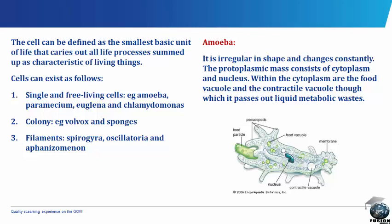Single and free-living cells — examples: Amoeba, Paramecium, Euglena and Chlamydomonas. Colony — examples: Volvox and Sponges. Filaments — examples: Spirogyra, Oscillatoria and Aphanizomenon.